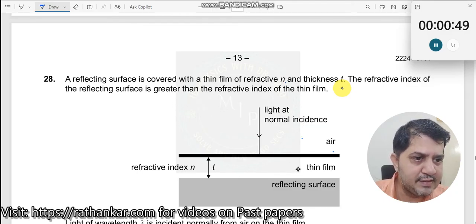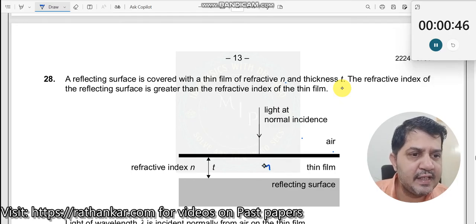So this has a refractive index, let us say mu, and this has another refractive index. This mu is larger than this.